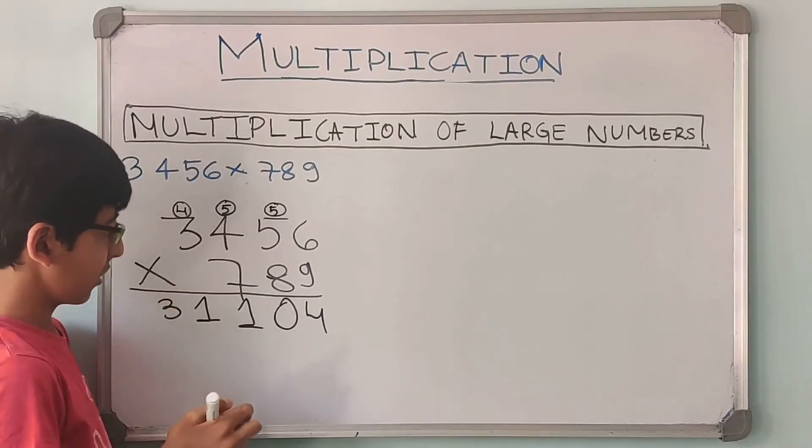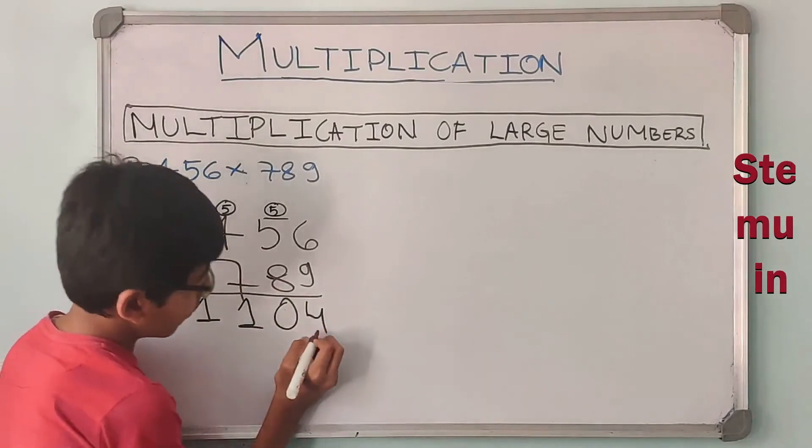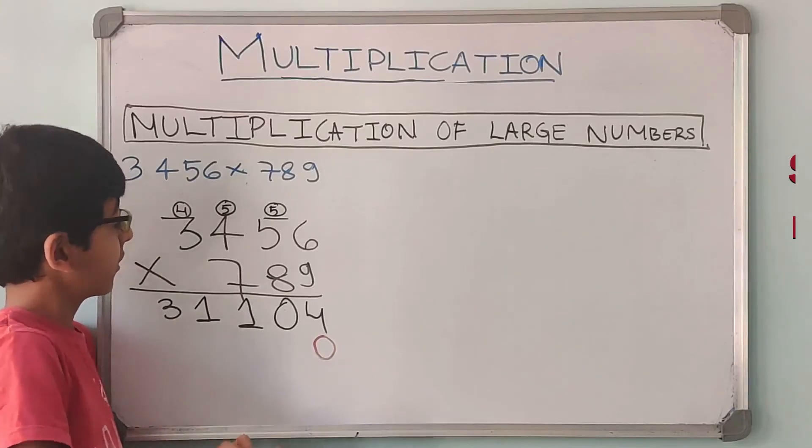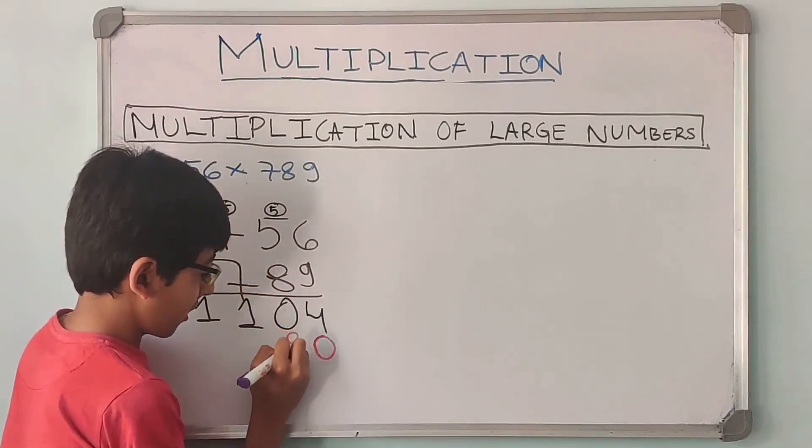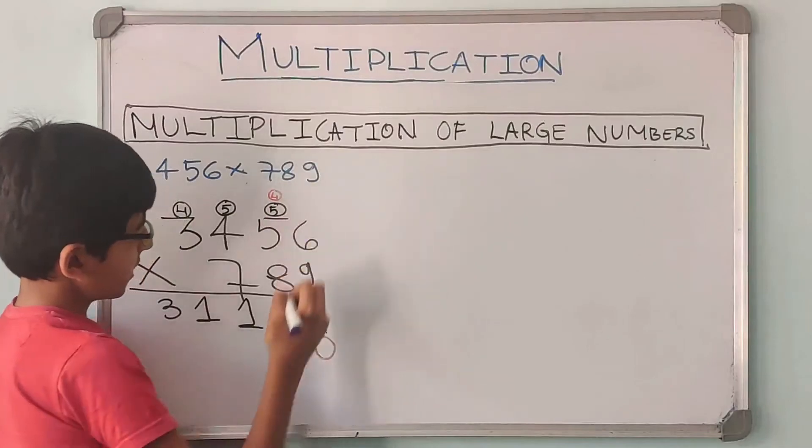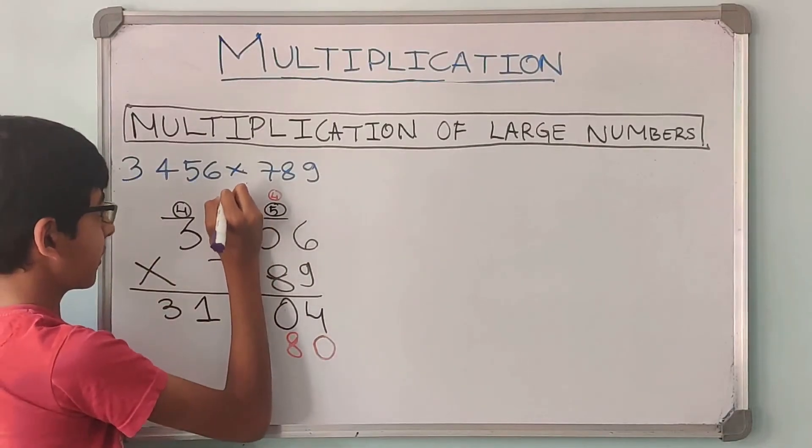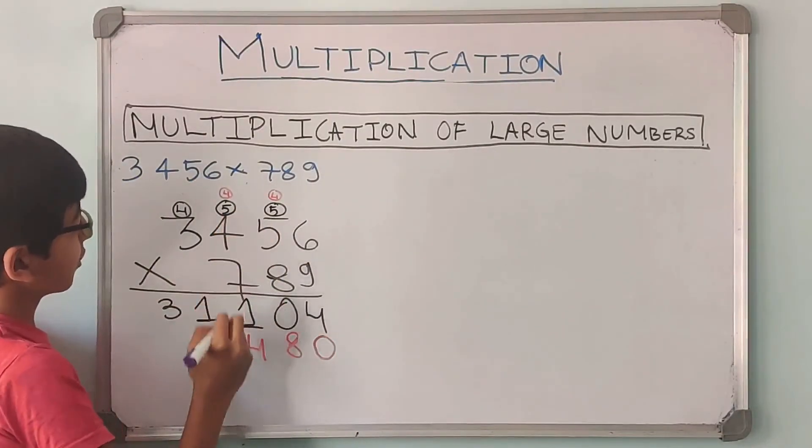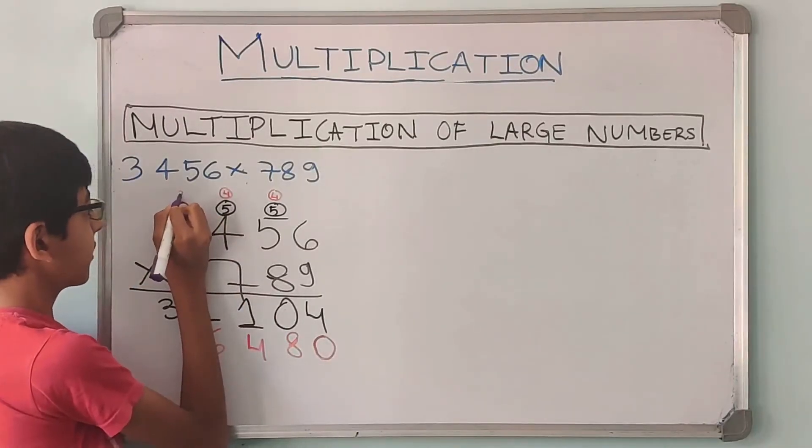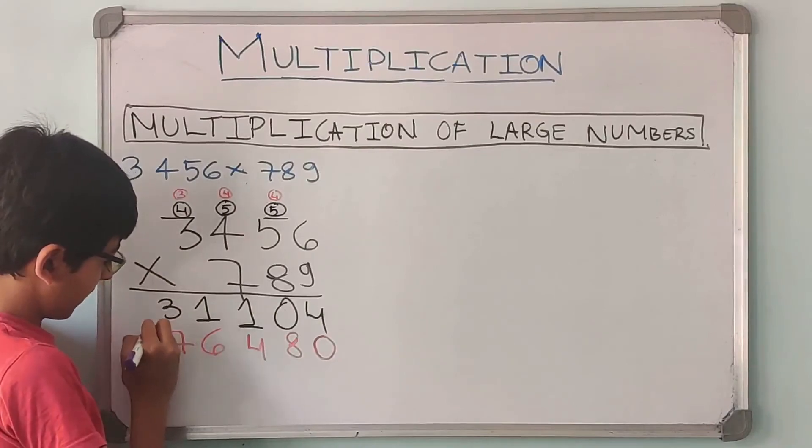Answer is not done yet. Now we have to multiply with 80. So first we will put a 0. You can also put a cross for this 0 if you want. 8 into 6 is 48, so the 8 is written down and the 4 is carry forward. 8 into 5 is 40, plus 4 is 44. 4 written down and then the 4 carry forward. 8 into 4 is 32 plus 4 is 36. 6 comes down, 3 carry forward. 8 into 3 is 24 plus 3 is 27.